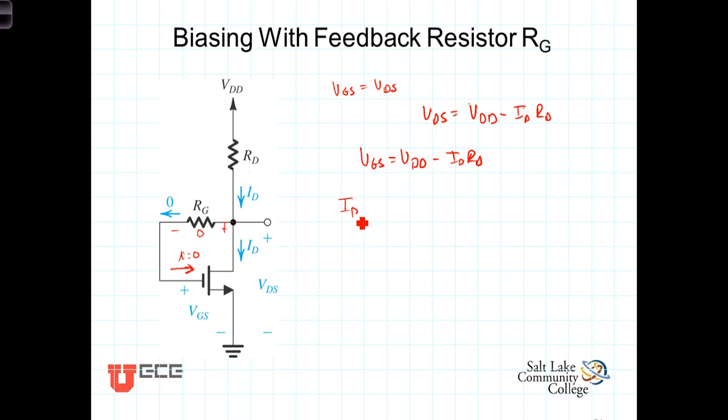Looking again at the equation describing the drain and gate relationships, I-sub-D is equal to one-half K-sub-N prime W over L times VGS minus VT quantity squared. This equation, which relates VGS to I-sub-D, together with the previous equation demonstrates the negative feedback nature provided by this resistor.